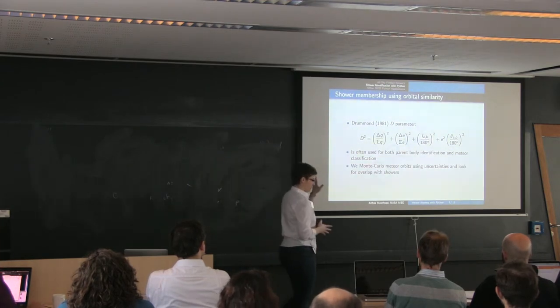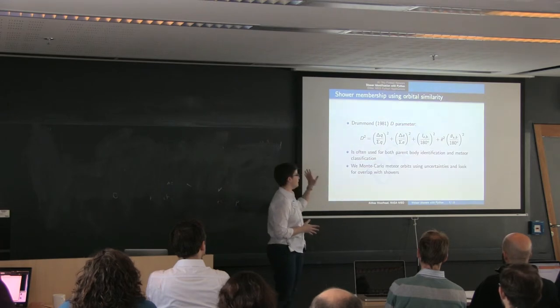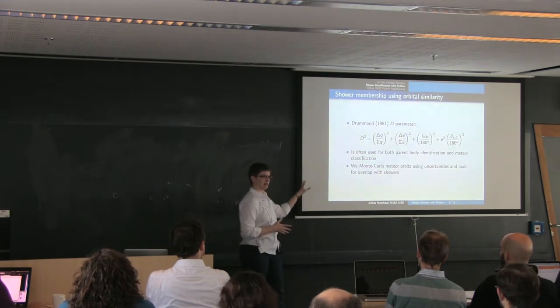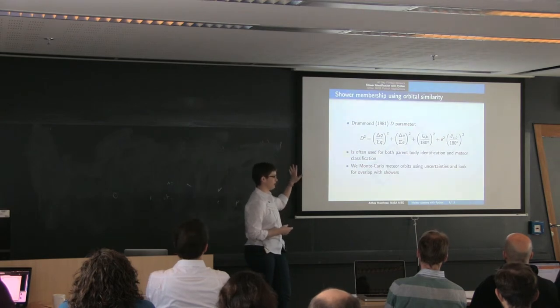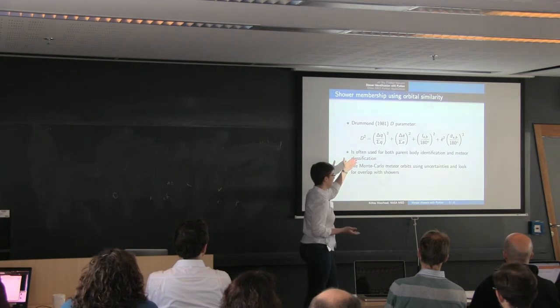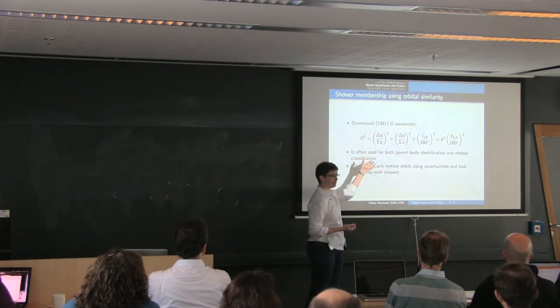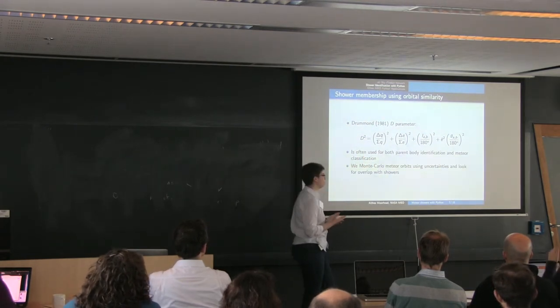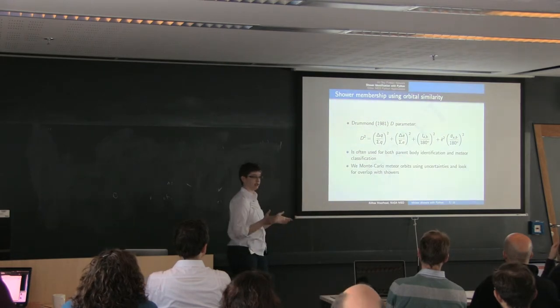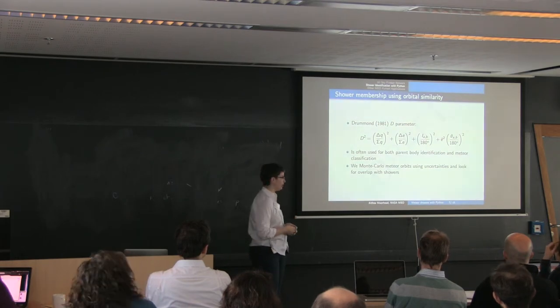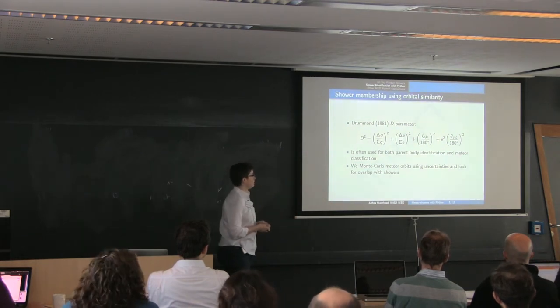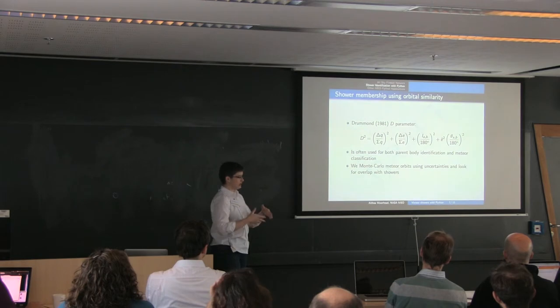So instead, what I do is I use an orbital similarity parameter. And this is popular within meteoritics. I haven't seen it too much outside of that. But it's just a quantification of the difference between two orbits. So you see it's got the relative difference in pericenter distance, eccentricity, the angle between the two orbital planes, and then also the angle between the eccentricity vectors. And of course, more similar they are, the smaller the d parameter.